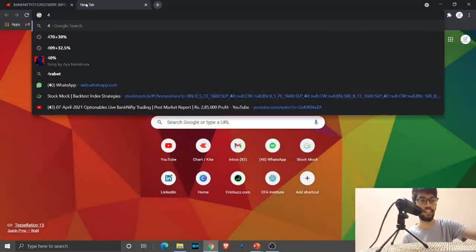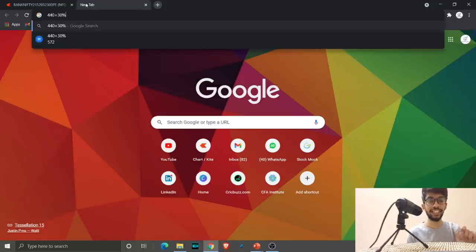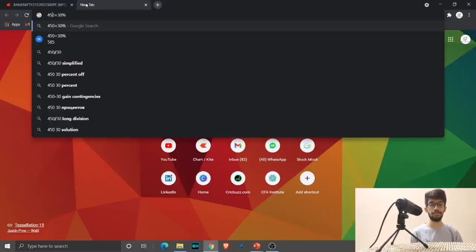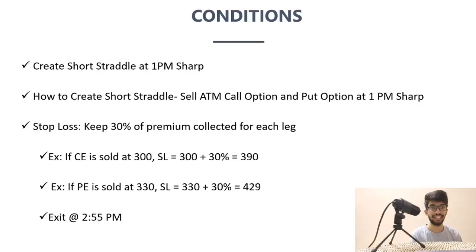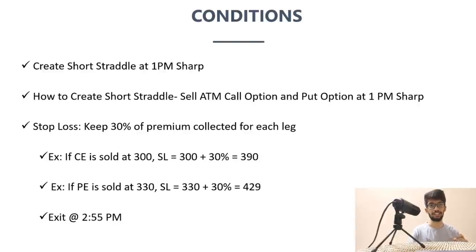The final condition: exit your trade at 2:55 pm regardless of profit or loss. Enter at 1 o'clock, come out at 2:55. You can close the system in the middle and come back. If you're not doing a huge quantity, place a stop loss market order. But if doing a large quantity, don't leave the system — a stop loss limit order might miss hitting on some days. So with less quantity you can place market stop losses and leave safely.